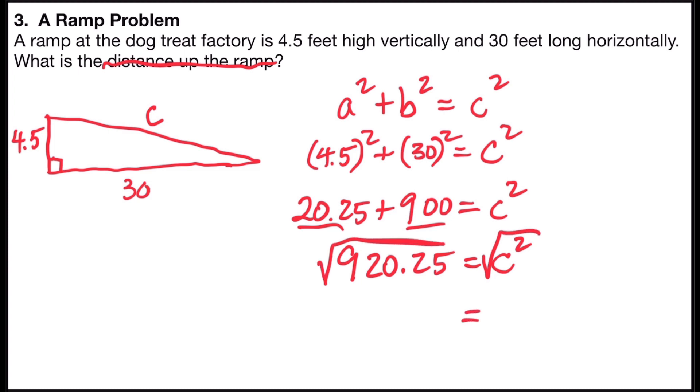So the square root of C squared, they undo one another. Their reverse operations will leave me with C. And the square root of 920.25 is approximately 30.33 feet. And so the distance up the ramp would be about 30.33 feet.